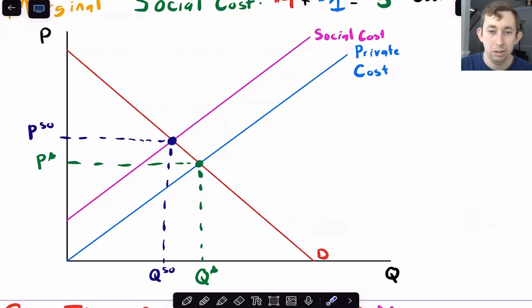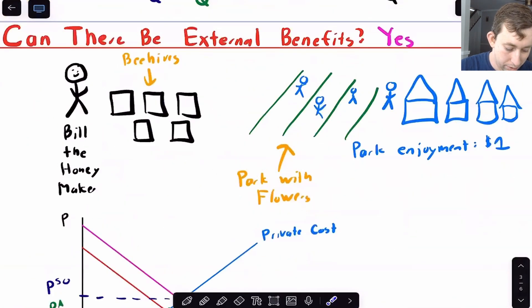But one question that I get a lot is, well, it's easy to think about pollution or negative things that impact others. Are there functions of production that sort of have a positive impact on the surrounding area? That answer is yes. Let me give you another example.